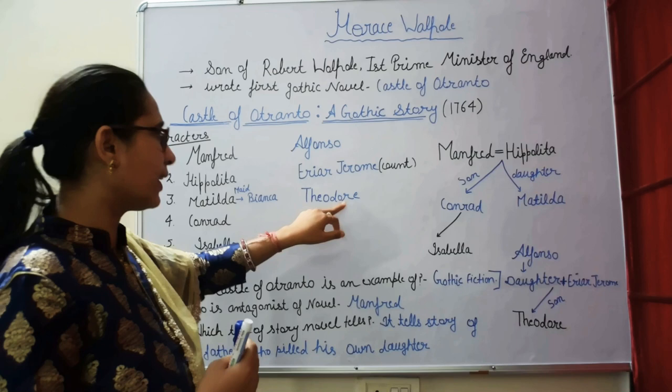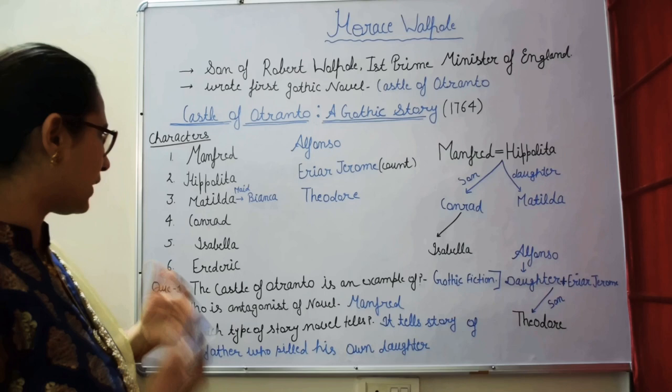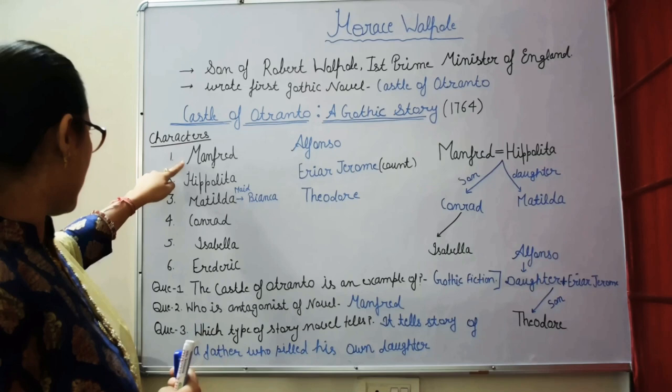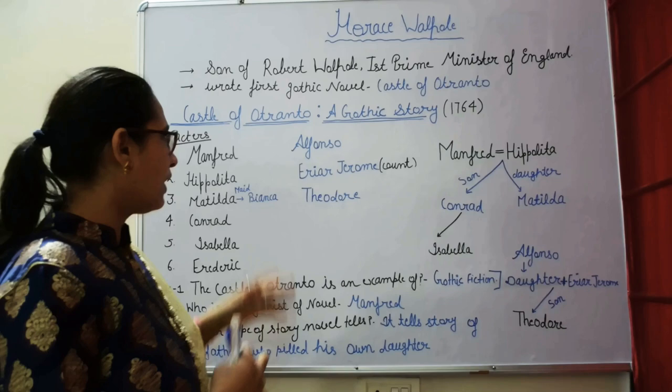Friar Jerome intervenes. He says that Manfred should not marry Isabella. Before Manfred proceeds, Friar Jerome says: you must divorce Hippolyta first in order to marry Isabella, but it is not so easy.